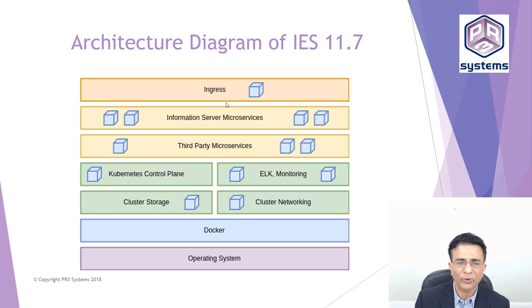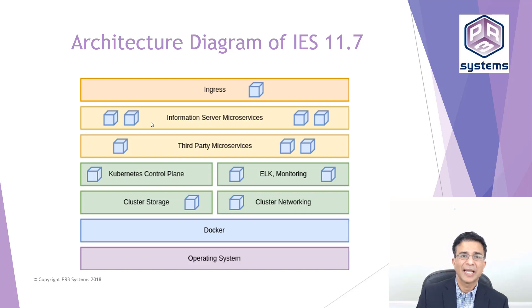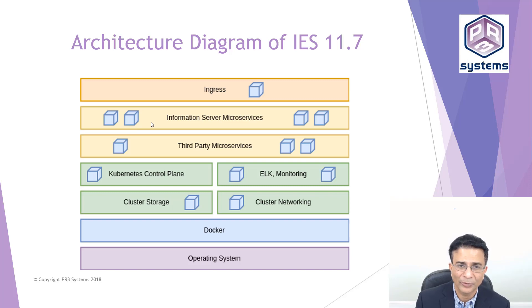Within the containers we have microservices of two types. The first are microservices created by Information Server developers that use all the Information Server components. These can also use third-party open source microservices like Cassandra and Kafka, which are used by the Information Server microservices.